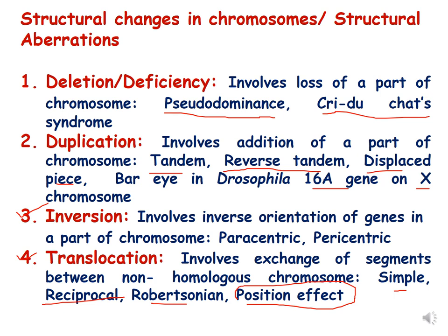Duplication is when a part of the chromosome gets duplicated. It involves addition of a part of chromosome and there are four kinds of duplication: tandem duplication, reverse tandem duplication, displaced piece. An example includes bar eye in Drosophila, which is caused by duplication of the 16A gene on the X chromosome.